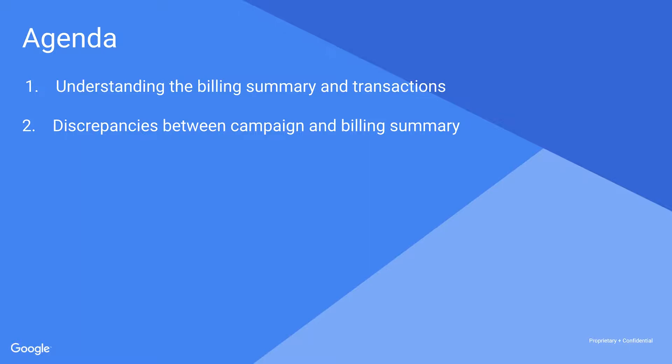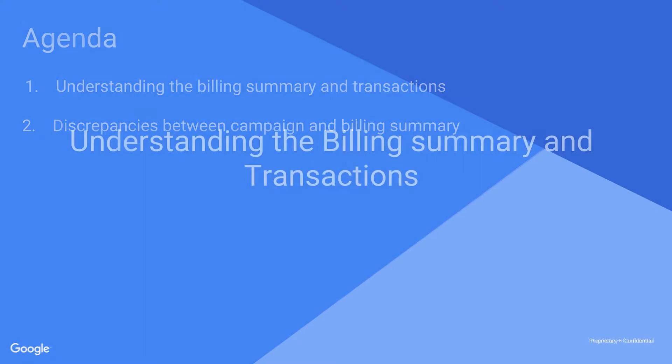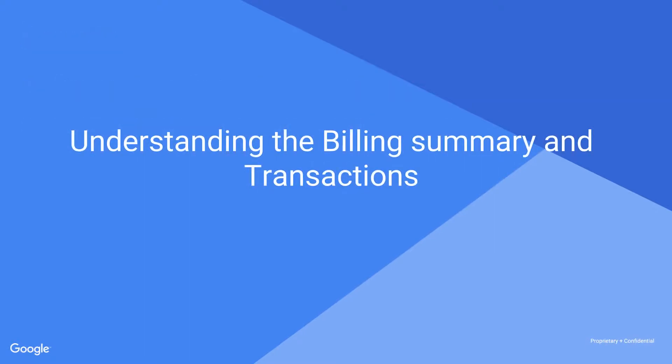The billing summary is an overview of your AdWords billing activity and may have a different look depending on the type of payment setting you're using, such as automatic payments, manual payments, or monthly invoicing.